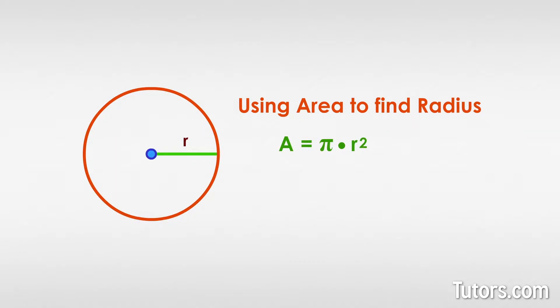And given the area of a circle, its radius is r squared equals A divided by pi, which can also be expressed as r equals the square root of A divided by pi.